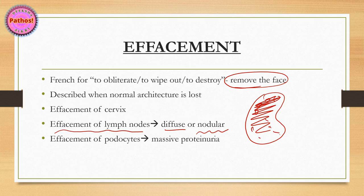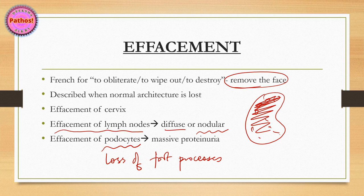Next, the term is used in kidney - effacement of podocytes. If podocytes lose their foot processes, the other term we use here is there has been loss of foot processes. Then there will be a problem with filtration, the slit diaphragm will be lost and you'll get massive proteinuria.